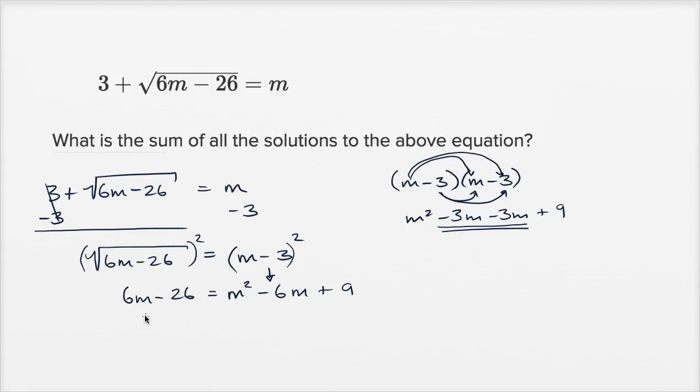So now, let's see if we can solve for m. Let's get everything on the right-hand side of the equation. So let's subtract 6m from both sides, and let's add 26 to both sides. The whole reason why I did that is to just clean out what I have on the left-hand side. So on the left-hand side, I'm just going to be left with zero. And on the right-hand side, I'm going to have m squared minus 12m plus 35. Or I could write m squared minus 12m plus 35 is equal to zero.